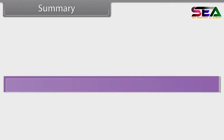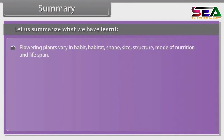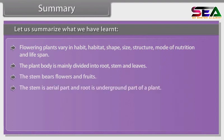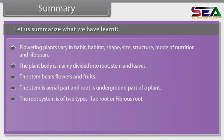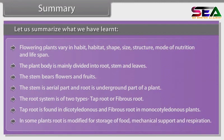Summary. Flowering plants vary in habit, habitat, shape, size, structure, mode of nutrition and life span. The plant body is mainly divided into root, stem and leaves. The stem bears flowers and fruits. The stem is the aerial part and root is the underground part of a plant. The root system is of two types: tap root or fibrous root. Tap root is found in dicotyledonous and fibrous root in monocotyledonous plants.